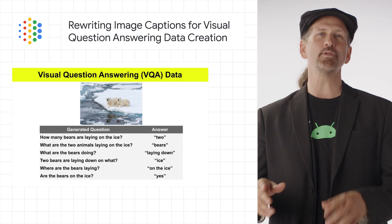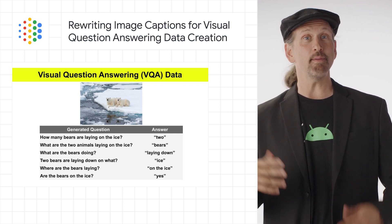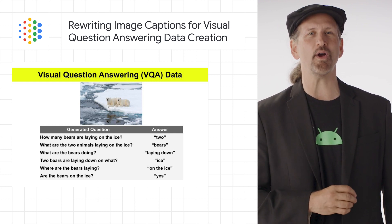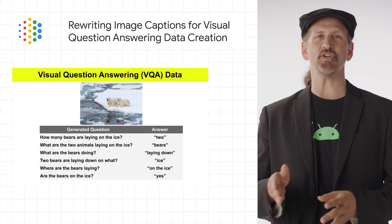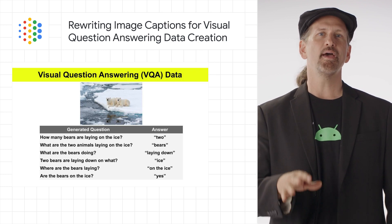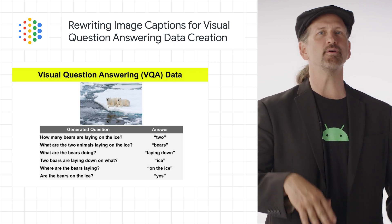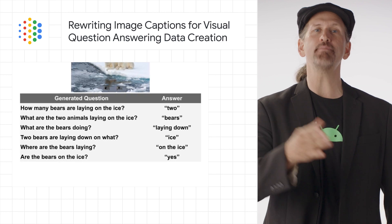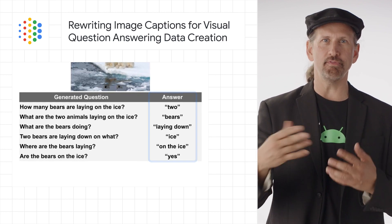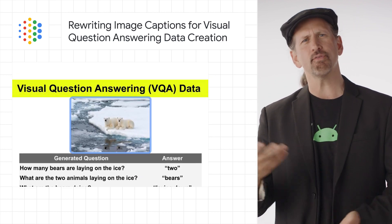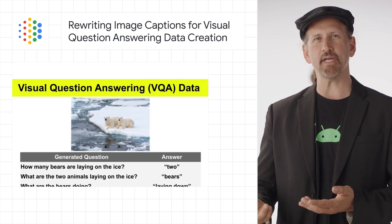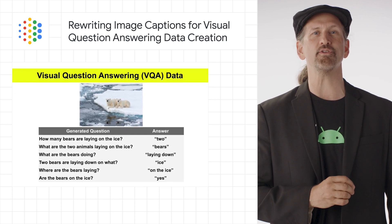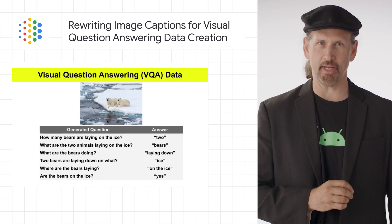We published "All You May Need for VQA Are Image Captions," exploring Visual Question Answering, or VQA, data generation. VQA is a multitask and open-ended machine learning task that requires a model to answer a visual question about an image, involving solving multiple technical research questions in computer vision and natural language understanding simultaneously.